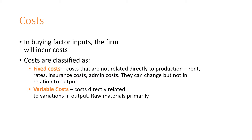The firm has to buy factor inputs, which will obviously cost the firm money. These costs also come in two forms: fixed or variable. Fixed costs are costs not related directly to production, such as rents, rates, and admin costs. They can change, but they do not have a direct relation to output.